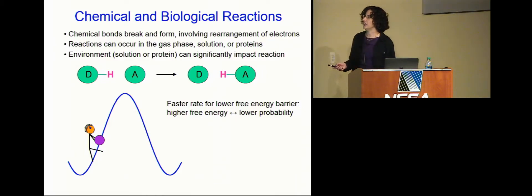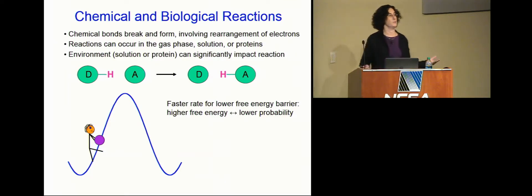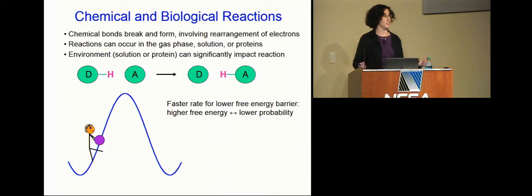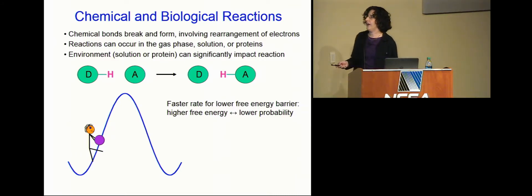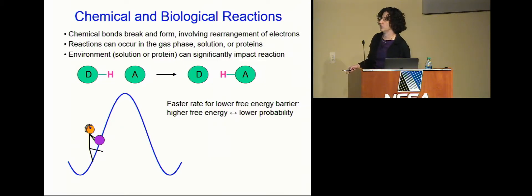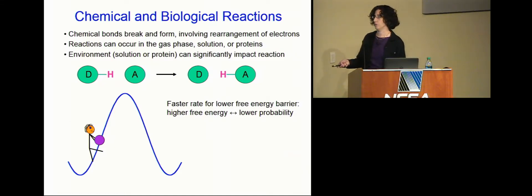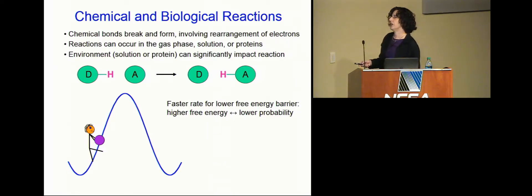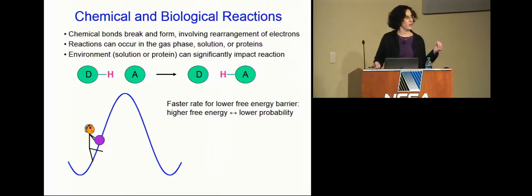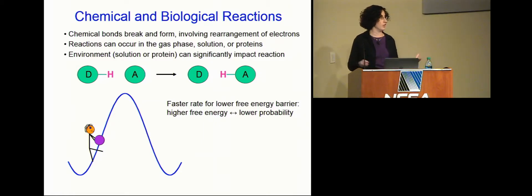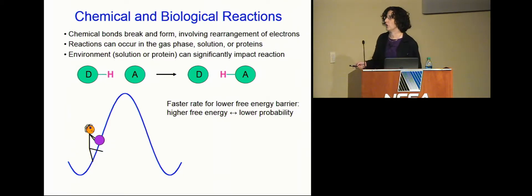To set the stage: the whole purpose of running these simulations is to explain experimental data and make experimentally testable predictions, so we want to calculate rates to compare to experimental measurements. That requires calculating a free energy barrier. The rate is faster for a lower barrier — like rolling a ball up a lower hill versus a higher one. Higher free energy corresponds to lower probability, so only a small fraction of atoms can get over the barrier. It's actually a very rare event to successfully react.